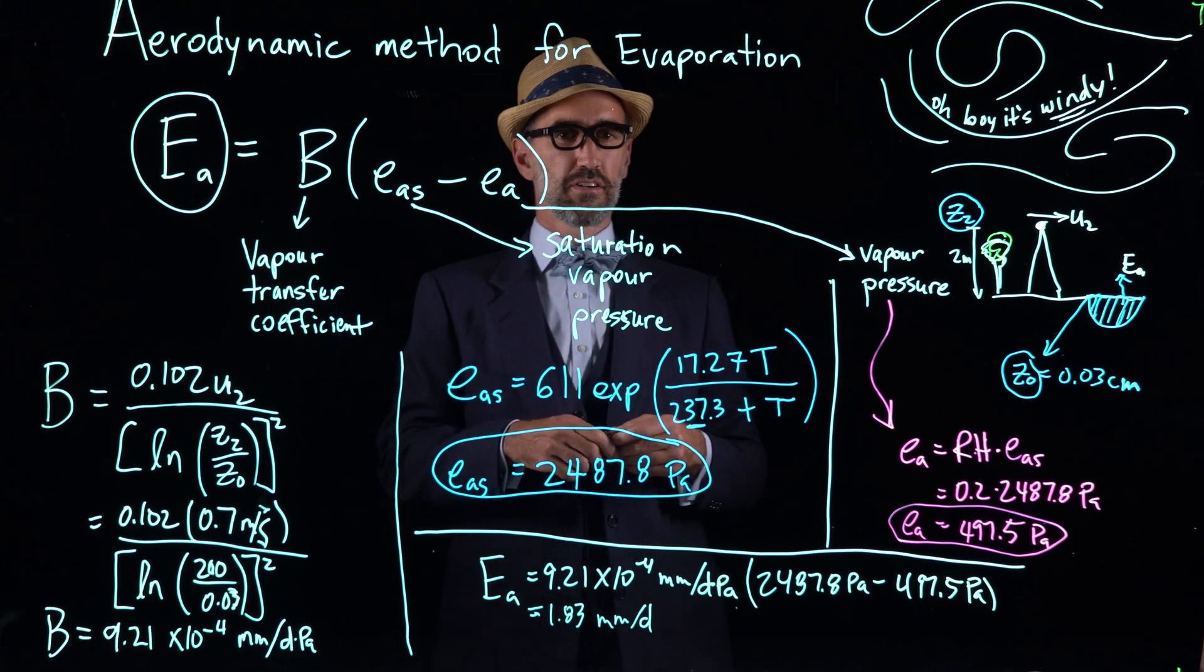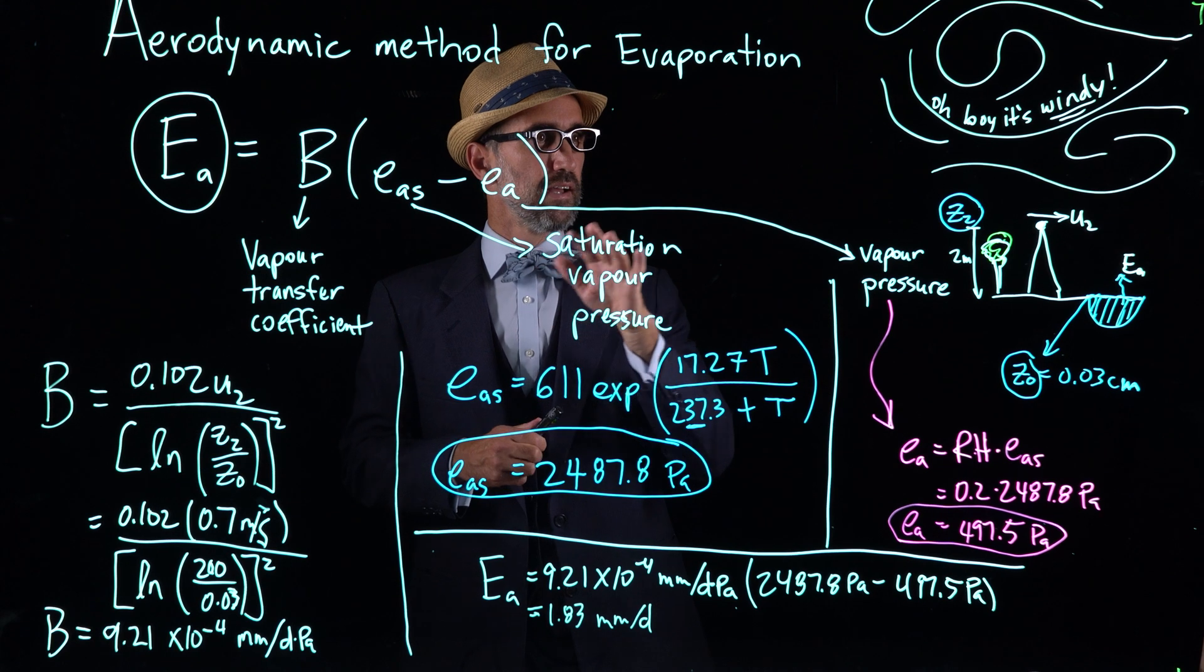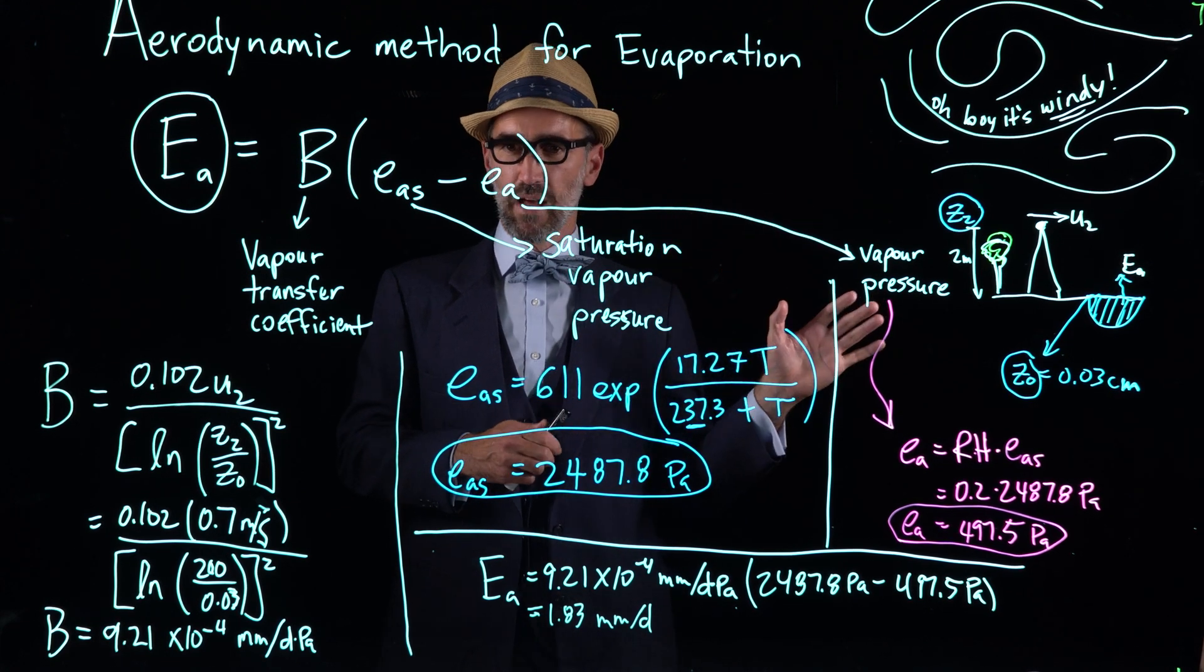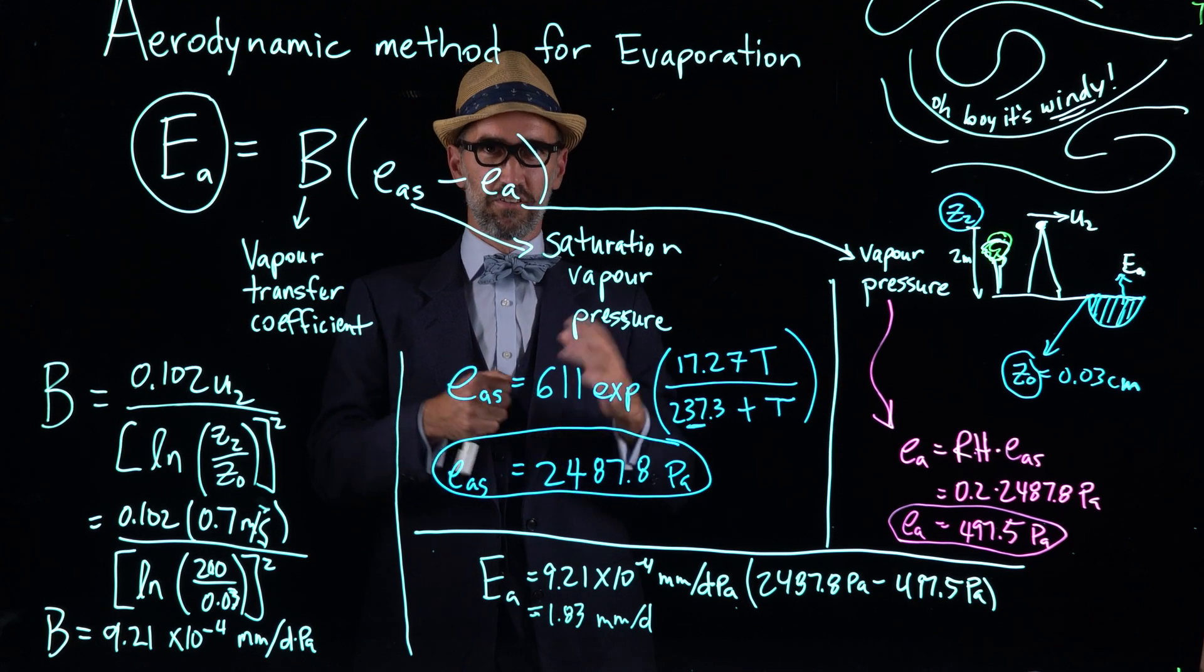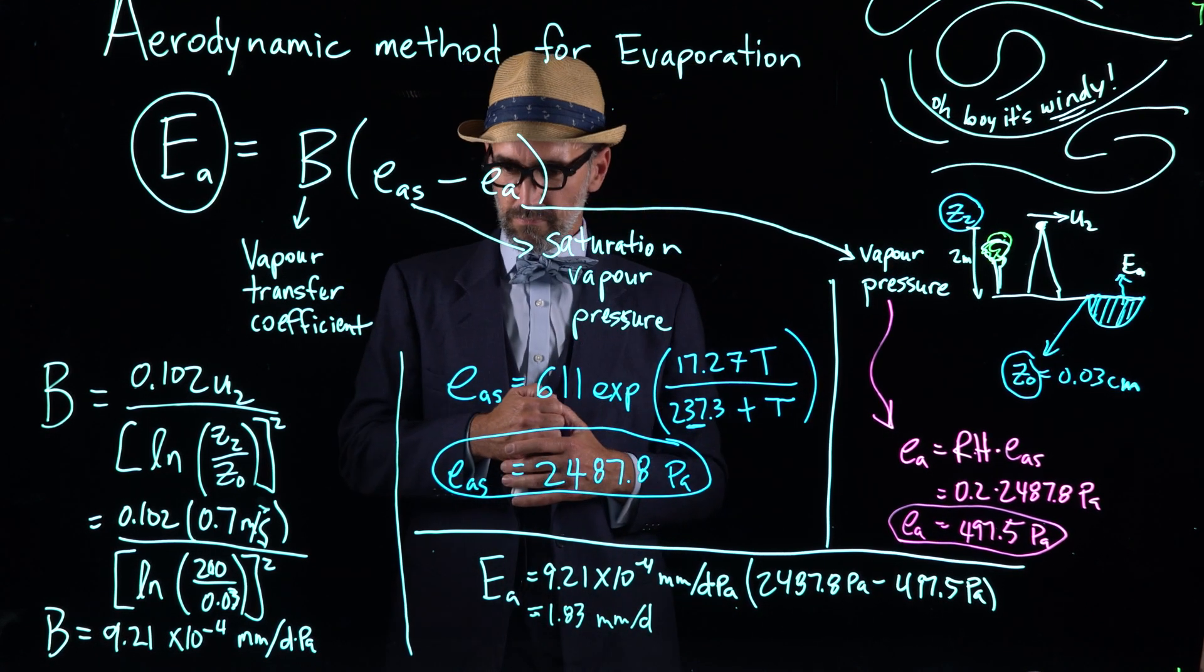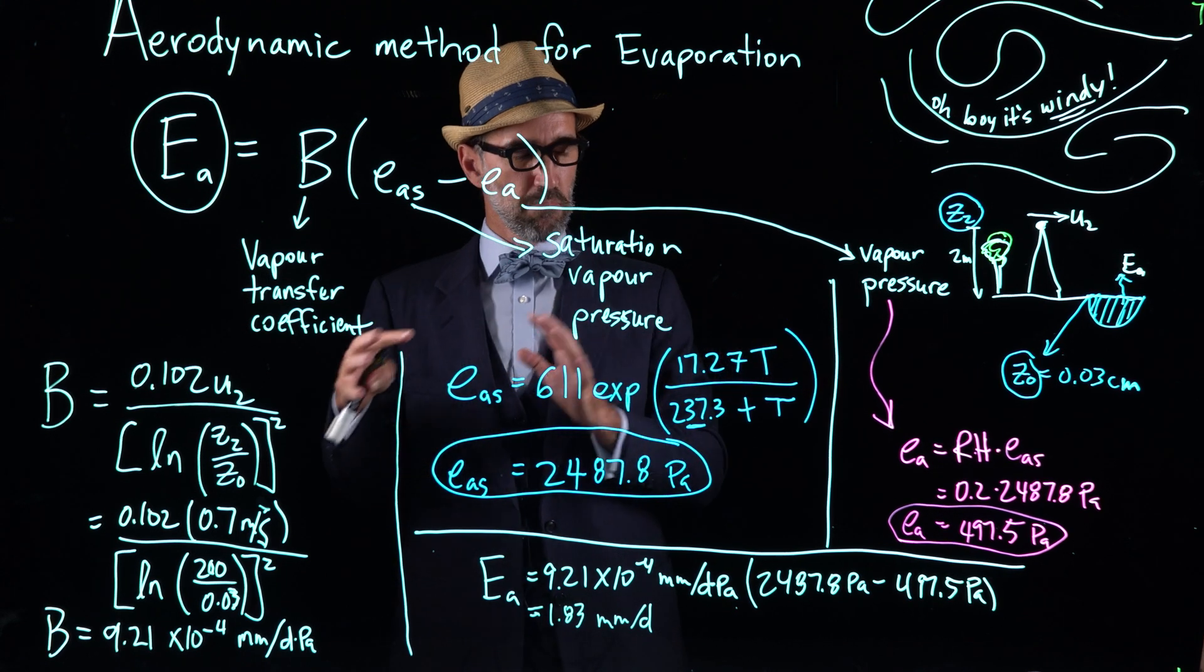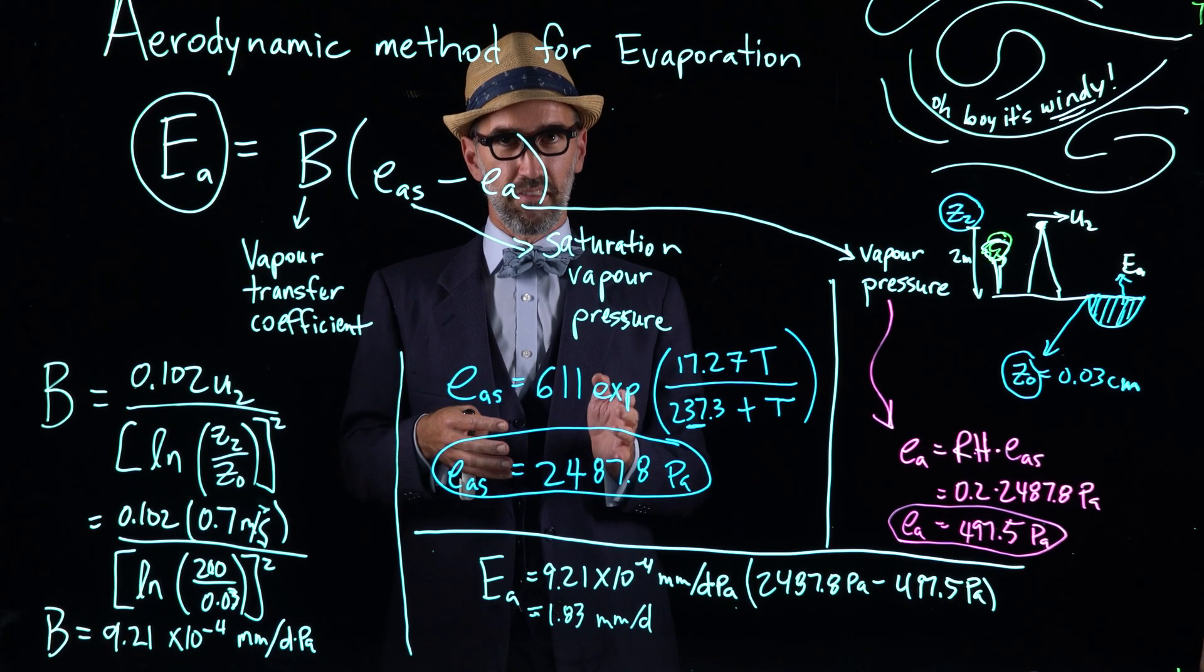So now we've calculated the rate of evaporation from a reservoir in Phoenix using the aerodynamic method and the energy balance method. So the wind and the sun to think about the two fundamental elements of Aristotle. And now we're going to combine these in the next method, in a method not surprisingly called the combined method.